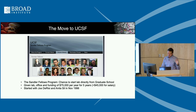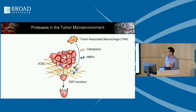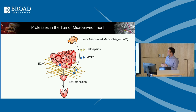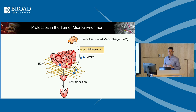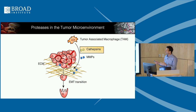At UCSF I shifted away from the proteasome and started working on lysosomal proteases — we had studied class one proteases, so what about MHC class two proteases? Those are the lysosomal cathepsins. The cysteine cathepsins are only 11 members in the human genome. They're predominantly found in the lysosome, and they also get secreted — predominantly by macrophages in the tumor microenvironment, called tumor-associated macrophages.